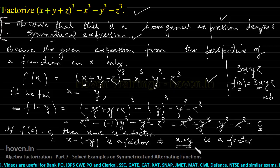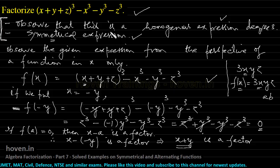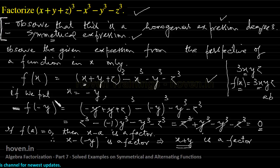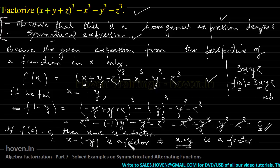So this is our first conclusion. To revise: we started by writing that this is a homogeneous and symmetrical expression. We observed the expression as a function in x only. We put x = −y and found that f(−y) = 0. By the factor theorem, x + y is a factor of this expression.